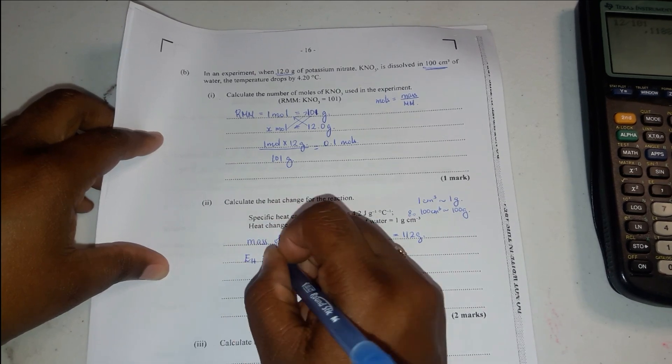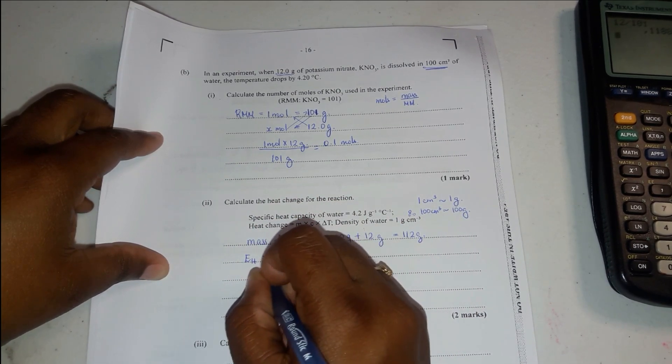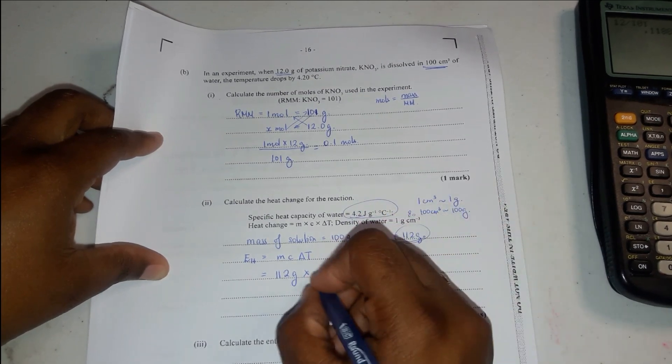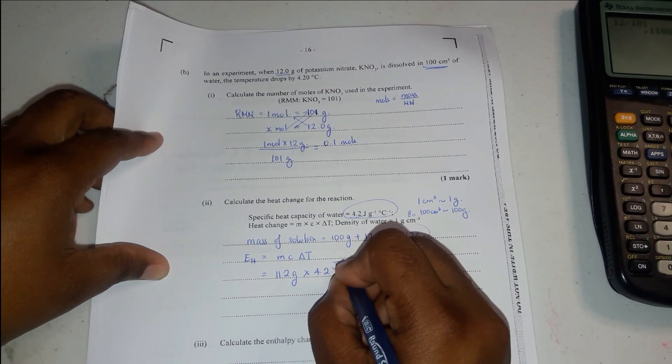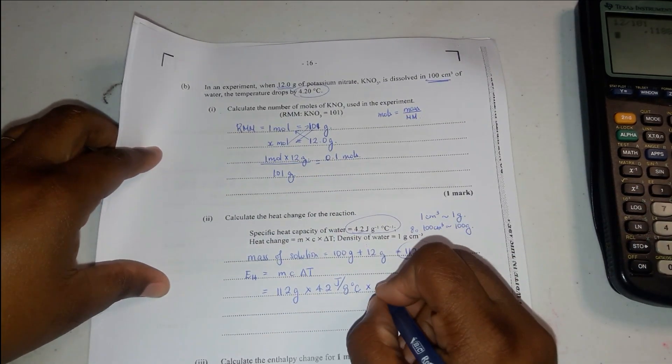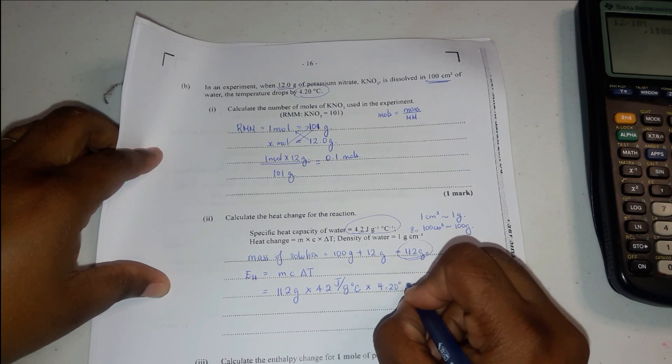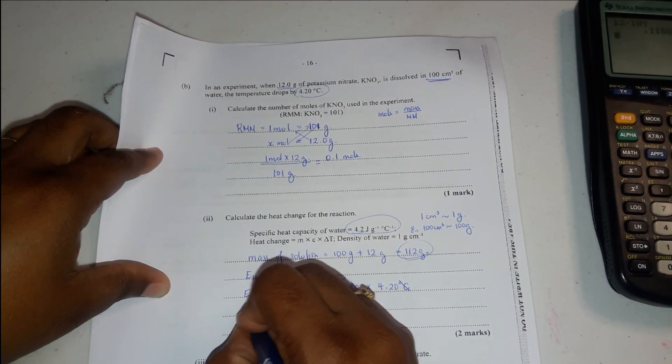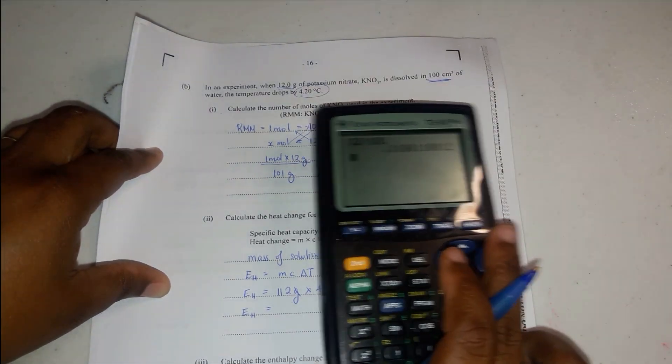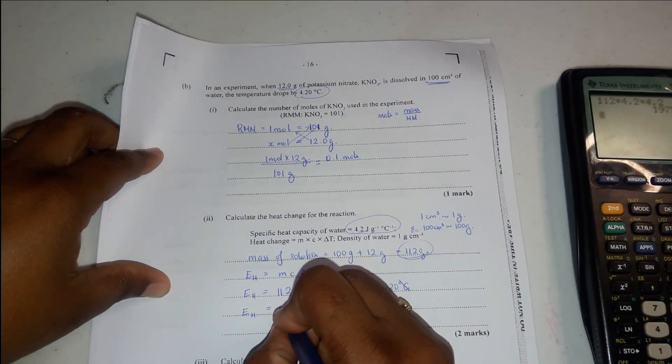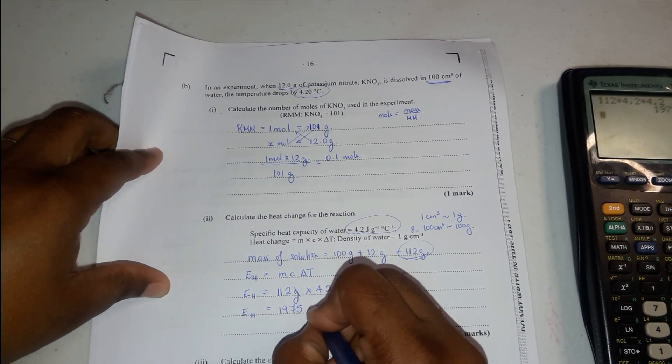Using EH equal to MCAT, we know the mass is 112 grams times the specific heat capacity 4.2 joules per gram degree Celsius, times the temperature change 4.20 degrees Celsius. These cancel and we're left with joules. Our answer being 112 times 4.2 times 4.2 equals 1975.68 joules.